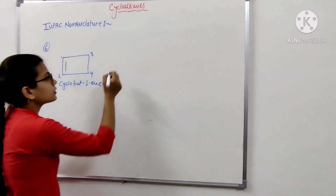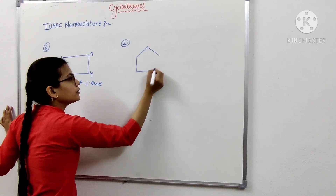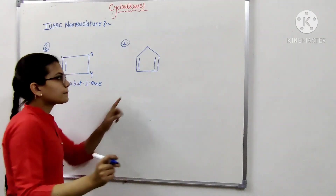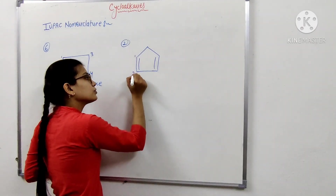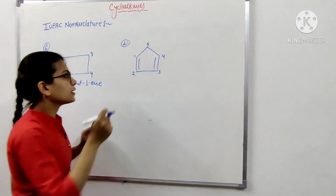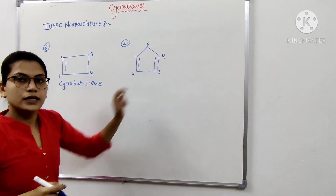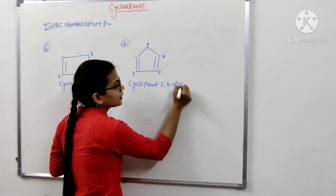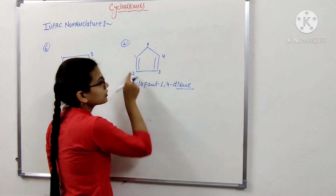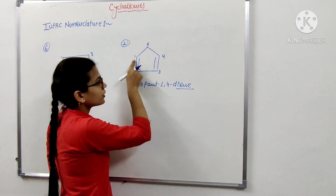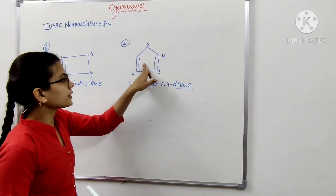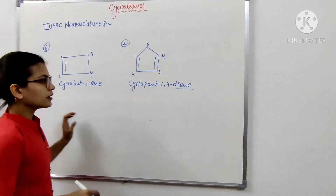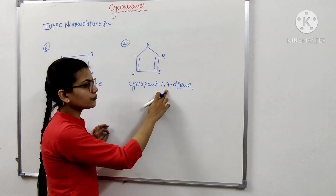The next structure is a five-member ring with a pi bond present. Numbering is started: 1, 2, 3, 4, and 5. Double bonds are present at the 1st and 4th positions, so its name is cyclopentadiene — specifically cyclohexane-1,4-diene. It is called 'di' because two pi bonds are present at the 1st and 4th carbon atoms. So its name is 1,4-diene.